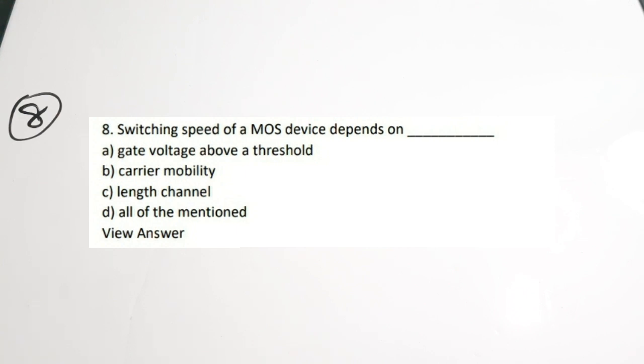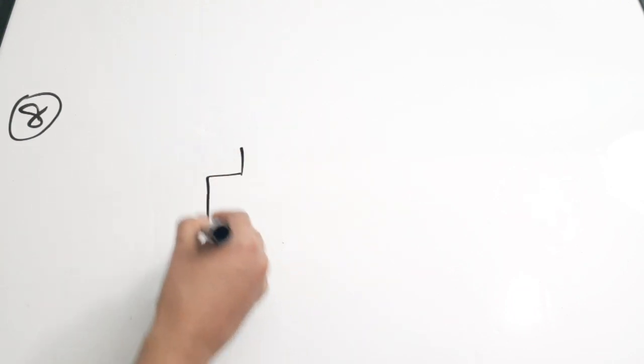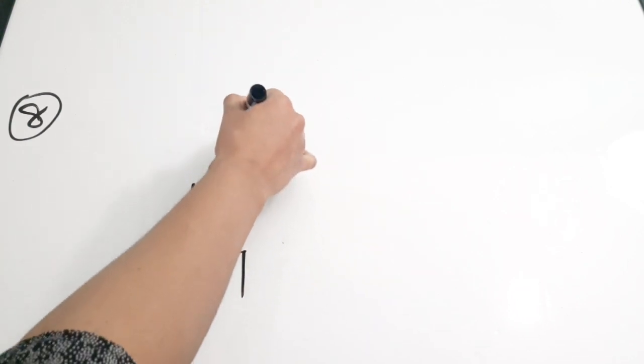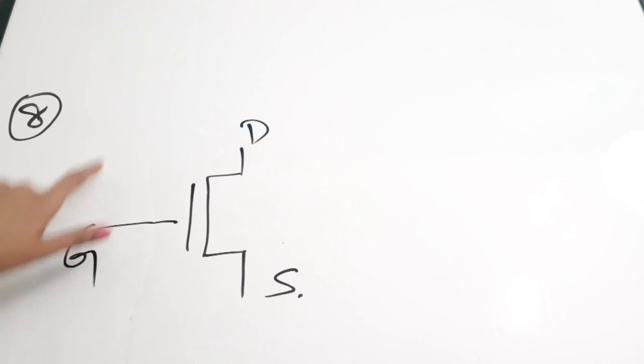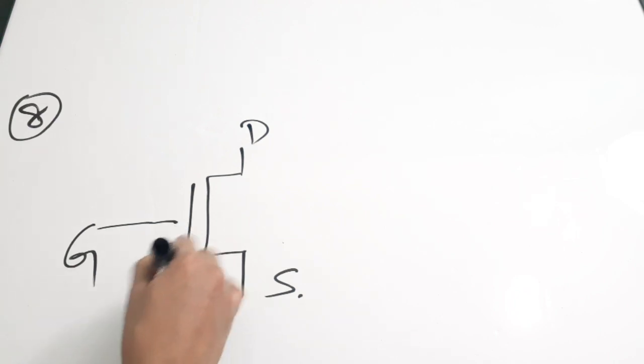Eighth question: Switching speed of a MOS device depends on dash. Options: A - Gate voltage above threshold, B - Carrier mobility, C - Length of the channel, D - All of the mentioned. It is actually depending on all of the mentioned. The gate voltage should be above threshold — only then the MOS device will be turned on. The MOS device generally has three terminals: gate, drain, and source. The gate input voltage should be above the threshold voltage, and the carrier mobility and channel length also play a role. So all of the mentioned is the correct answer, which is option D.